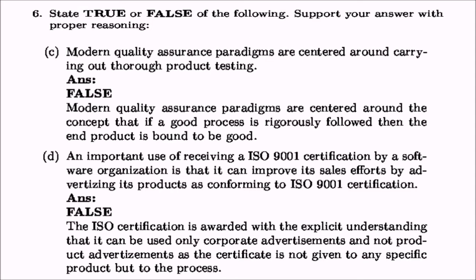Next: modern quality assurance paradigms are centered around carrying out thorough product testing. The answer is false. Thorough product testing is not even possible — you cannot thoroughly test a product unless it is life-threatening. Modern quality assurance paradigms are centered around the concept that if a good process is rigorously followed, then the product is bound to be good. They talk about processes which should be followed rigorously.